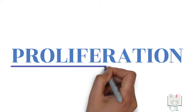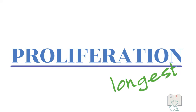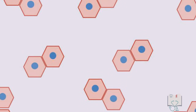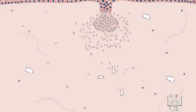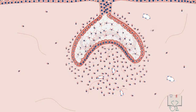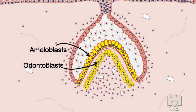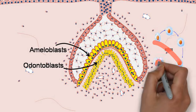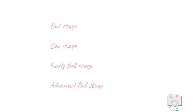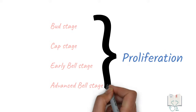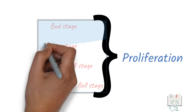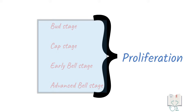Next, proliferation. This stage runs the longest during tooth development. As for any organ formation, proliferation — or increase in the number of cells — is an essential requirement. Proliferation starts right after initiation and continues, causing the enamel organ to grow in size. It stops only after the differentiation of ameloblasts and odontoblasts, as these cells lose their ability to multiply once fully matured. Comparing with morphological stages, proliferation starts in the bud stage, continues in cap stage and early bell stage, and stops in advanced bell stage with differentiation of ameloblasts and odontoblasts.